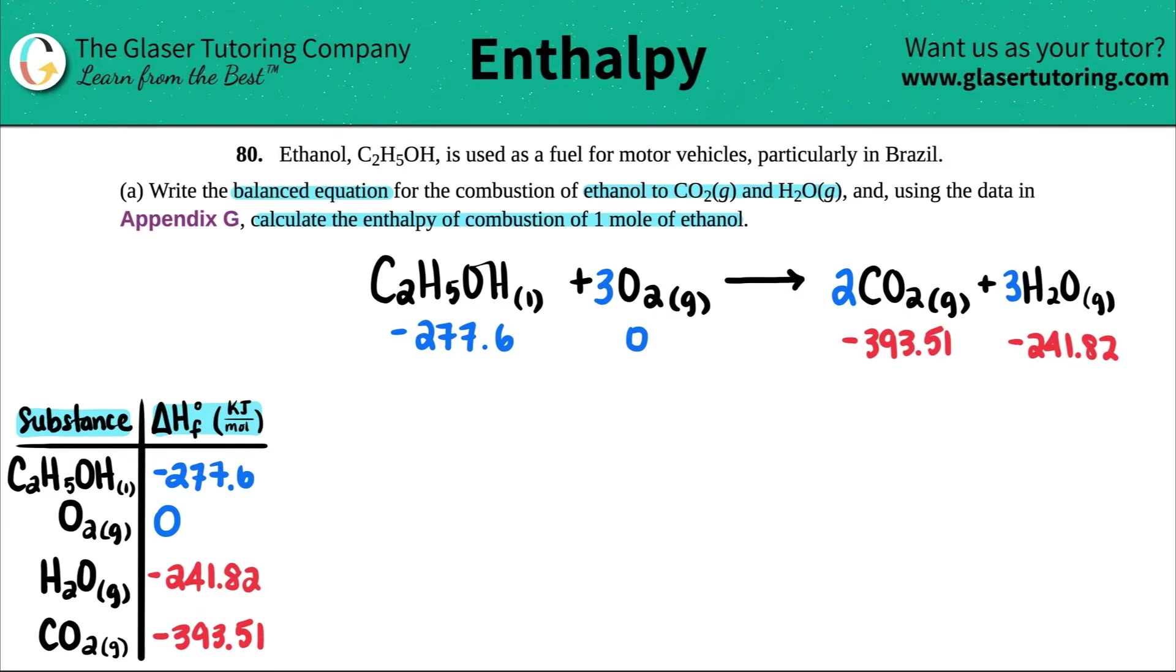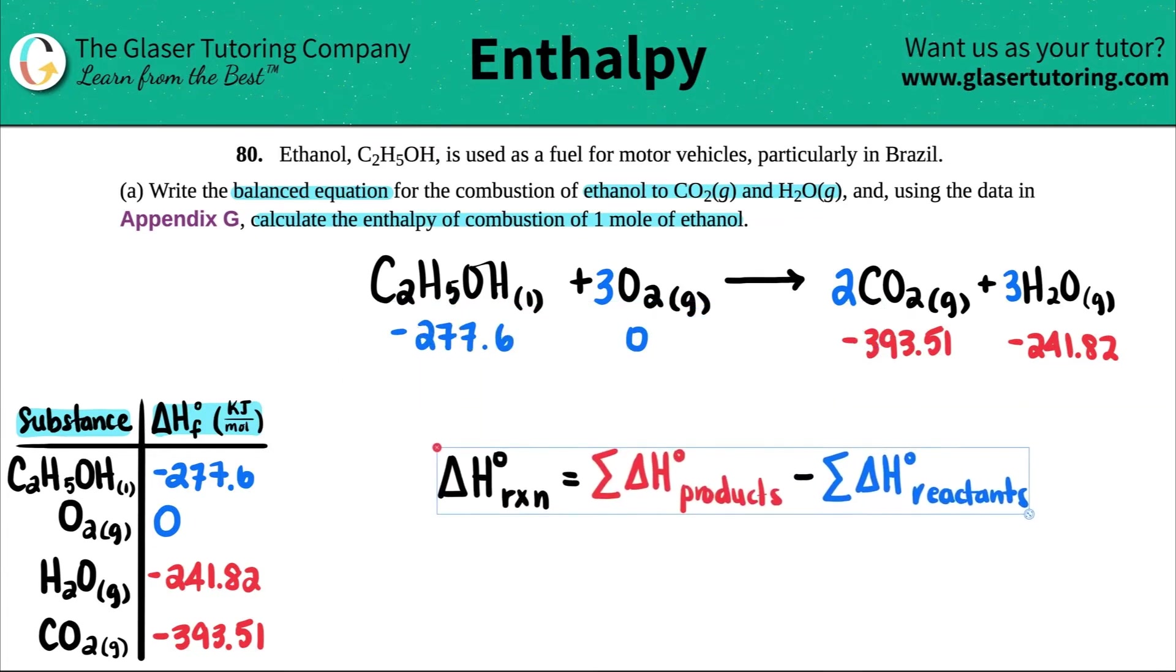Okay. So now we've done an enthalpy. We found the enthalpy of a reaction. It's just this formula here. Just products minus reactants. Delta H for a whole reaction, RXN reaction is the sum. This little symbol is the sum, AKA addition. We've got to add up all the delta H's of the products minus add up all the delta H's of the reactants.